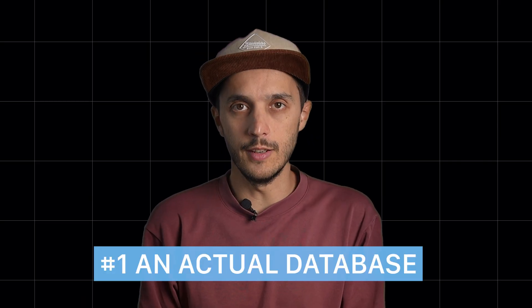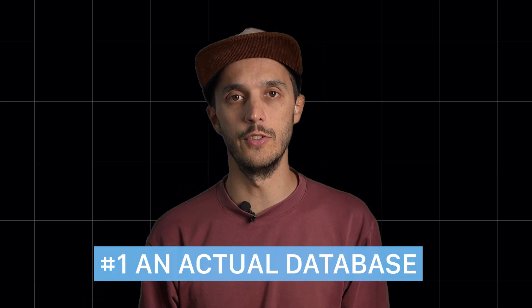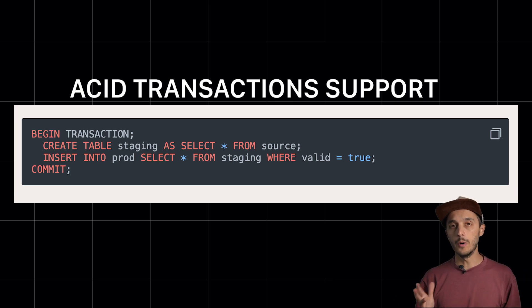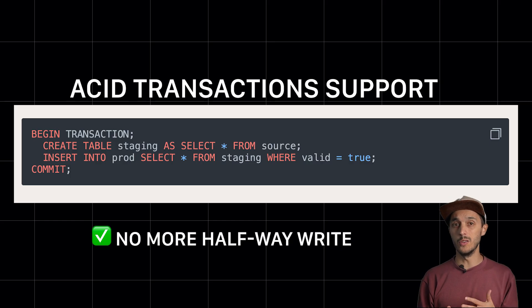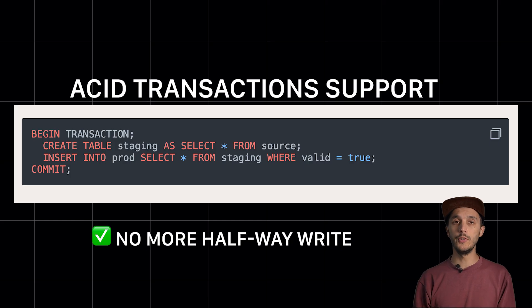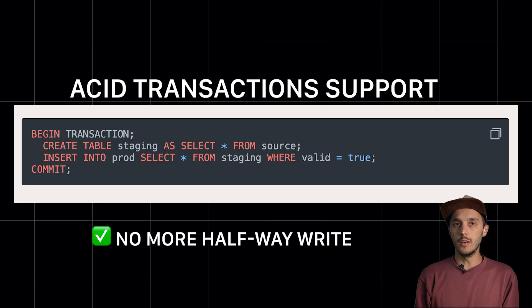Point 1 — the obvious one: it's an actual database. That means ACID transactions. If anything fails in your pipeline, automatic rollback. Your data stays intact. No more corrupted Parquet files because your pipeline crashed halfway through a write. If you're writing to a CSV or Parquet file and something breaks, you've got half-written garbage data. With DuckDB, that's not a problem.